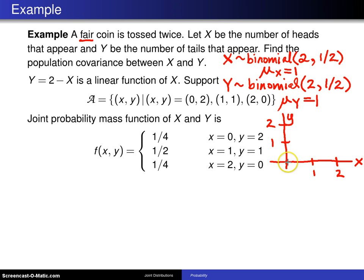The mass values here, the values in the support, could be two heads, which means you will get 0 tails, or you could get 1 head and 1 tail, or you could get 0 heads and 2 tails. Those three points there are the only possibilities, so those three comprise the support script A.